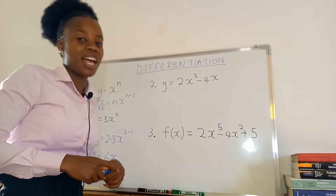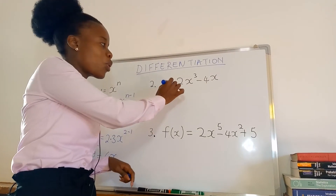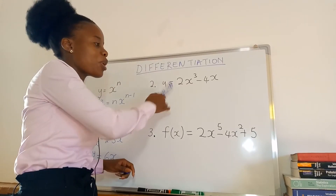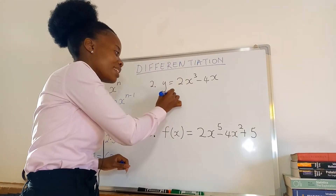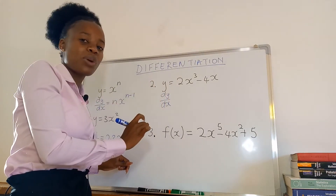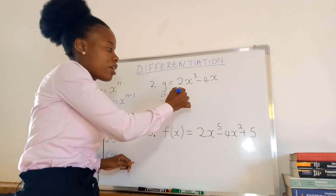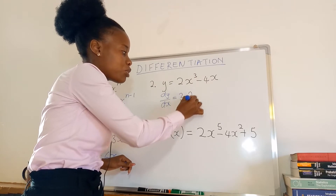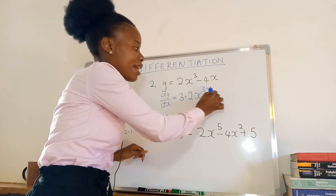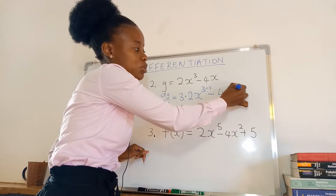Number two: y equals 2x cubed minus 4x. We write dy over dx to show we are differentiating with respect to x. We drop the power: 3 times 2x to the power three minus one, minus 4x — which is the same as 4x to the power one, so one minus one.